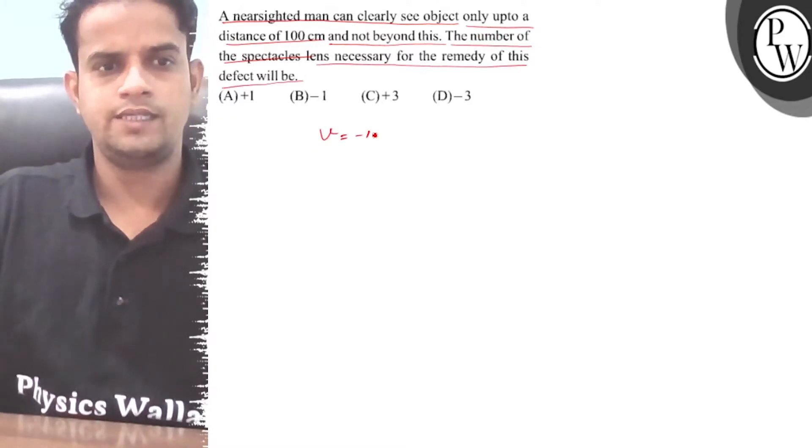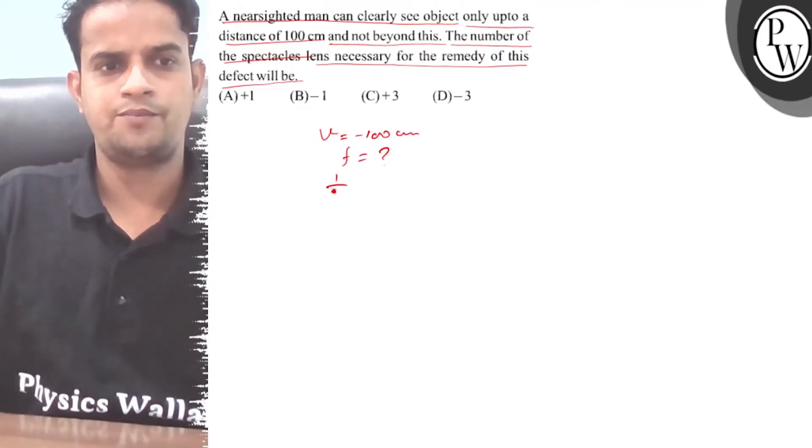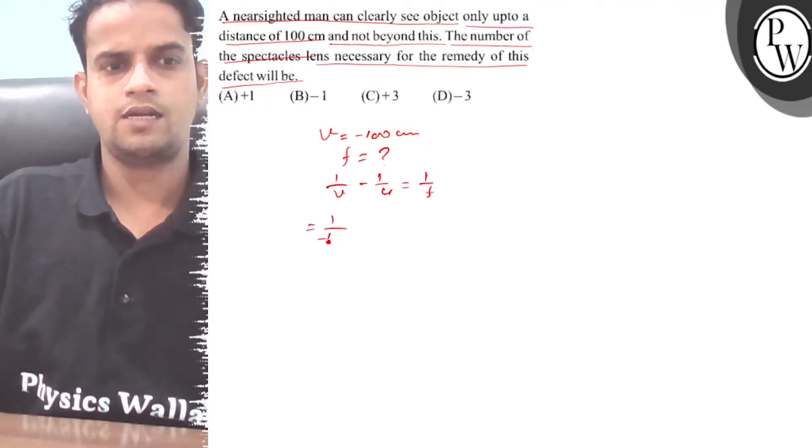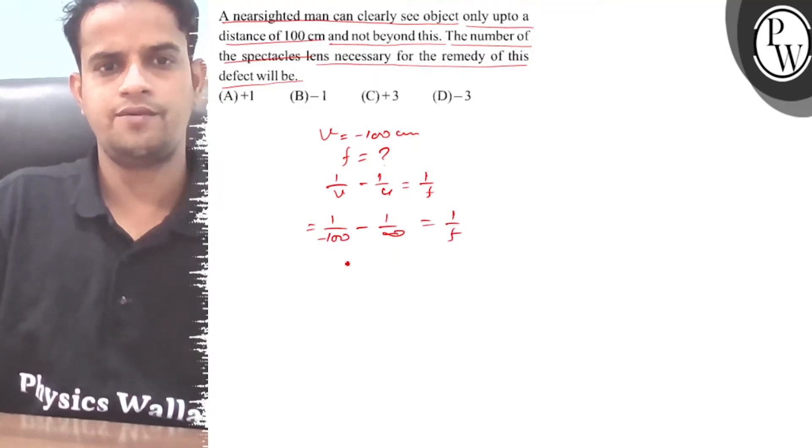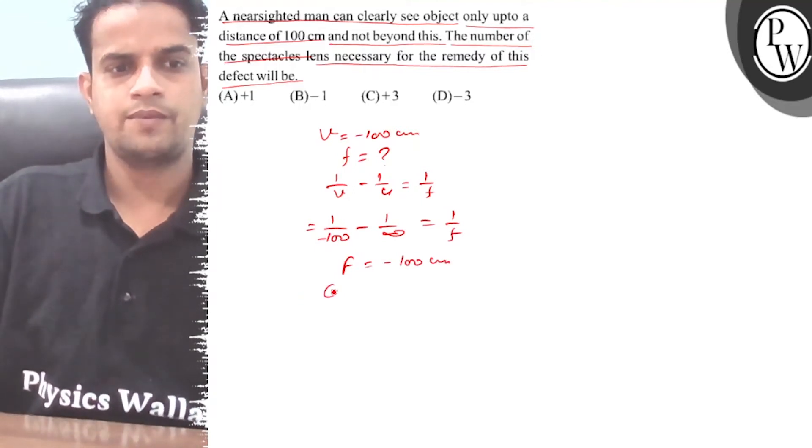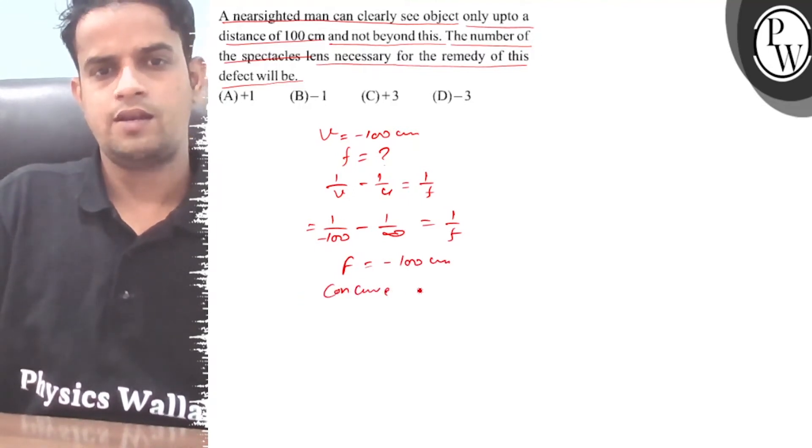We use V = -100 centimeters. Applying the lens formula: 1/V - 1/U = 1/F. So 1/F = 1/(-100) - 1/(-infinity) = 1/(-100). Therefore, F = -100 centimeters. This will be a concave lens.